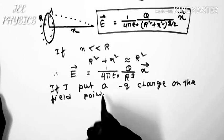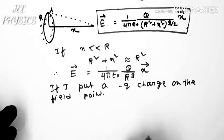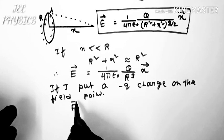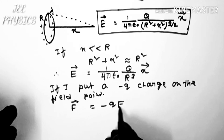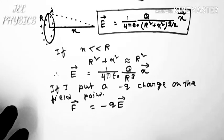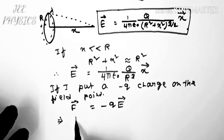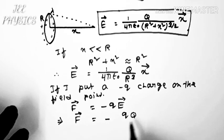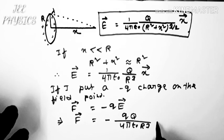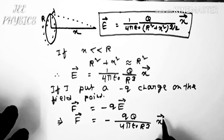Then I get force on the charge f equal to minus q into E or f equal to minus q into q by 4 pi epsilon naught into r cube into x.